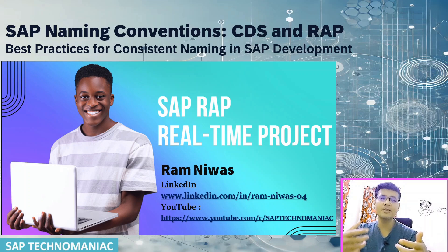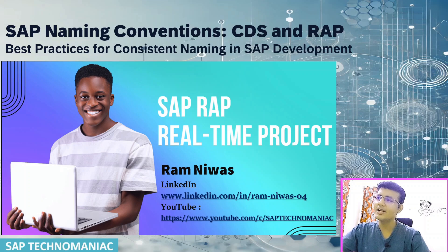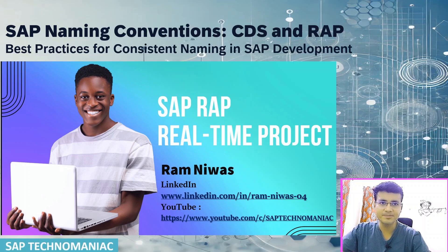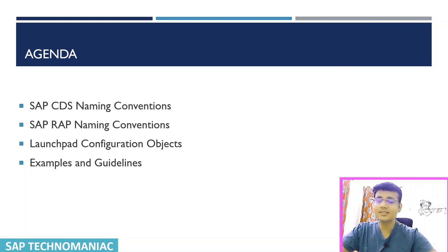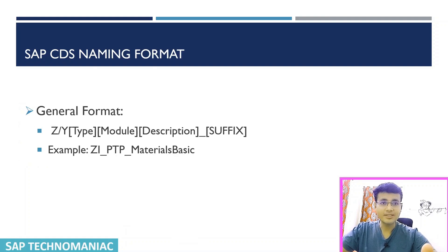For example, for this one we can use one naming convention or we can use another — that also we can discuss. So let's get started. We'll go through the naming conventions one by one: first CDS naming convention, then RAP artifacts naming convention, then launchpad configuration object naming convention, with examples and guidelines.